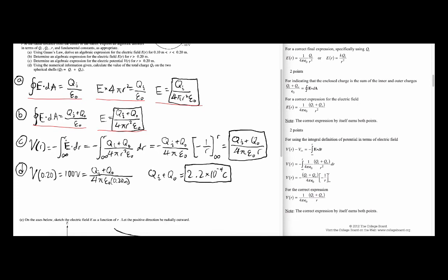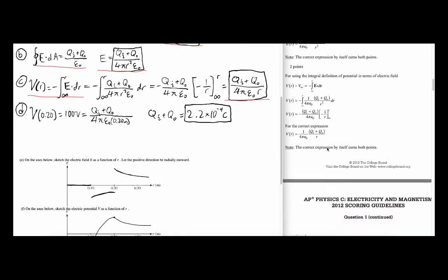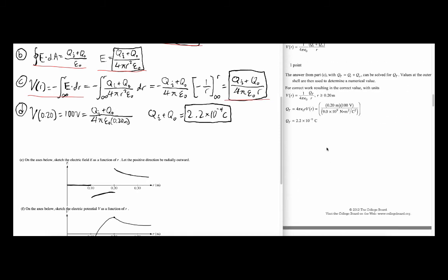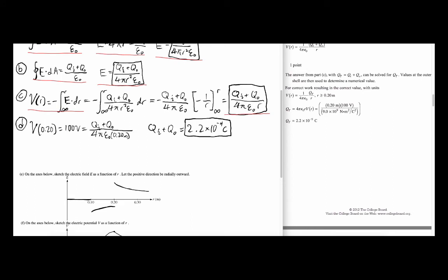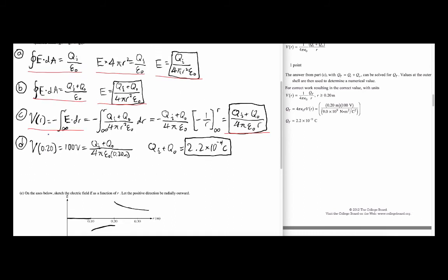Part c was worth two points — one for writing out the integral and one for the final answer. Writing just the final answer would also have earned both points. Part d was worth one point; you had to show work to determine the correct value — plugging in 100 volts at r equals 0.2 and getting the correct final answer.